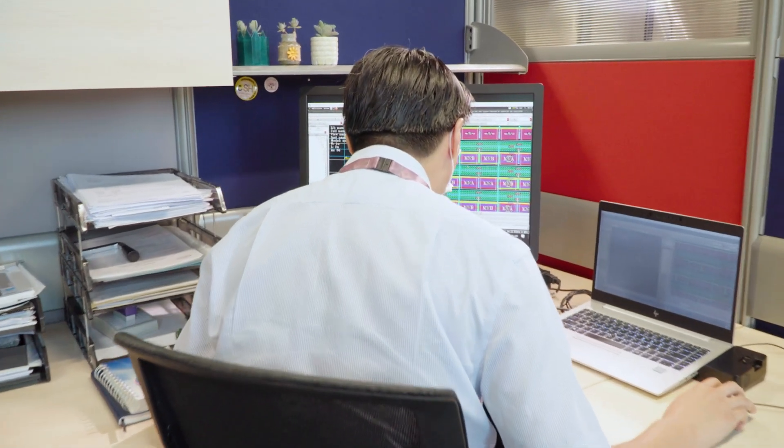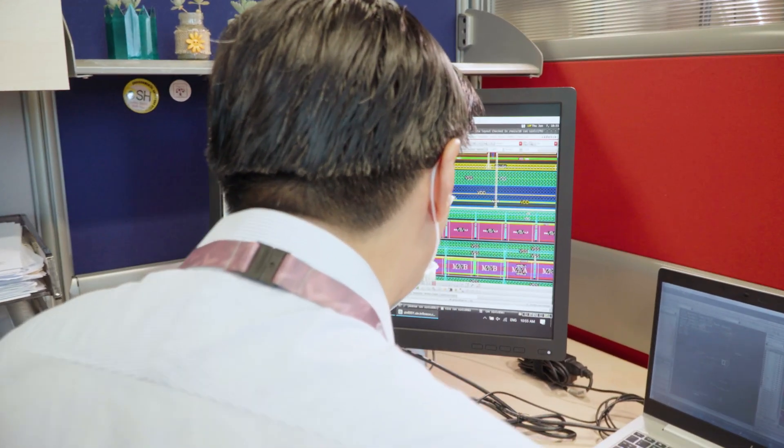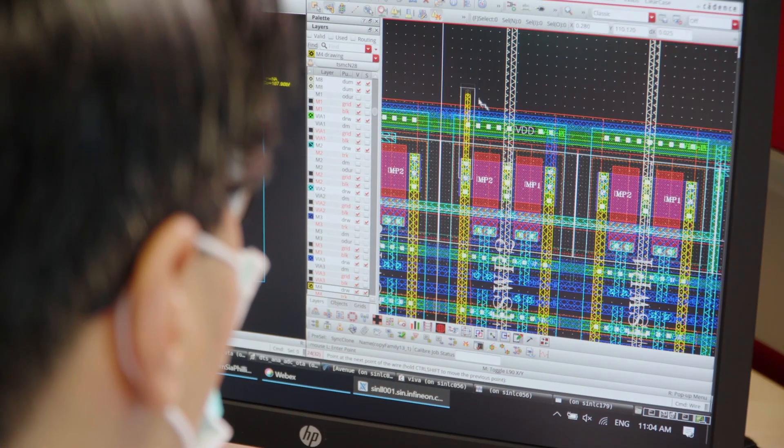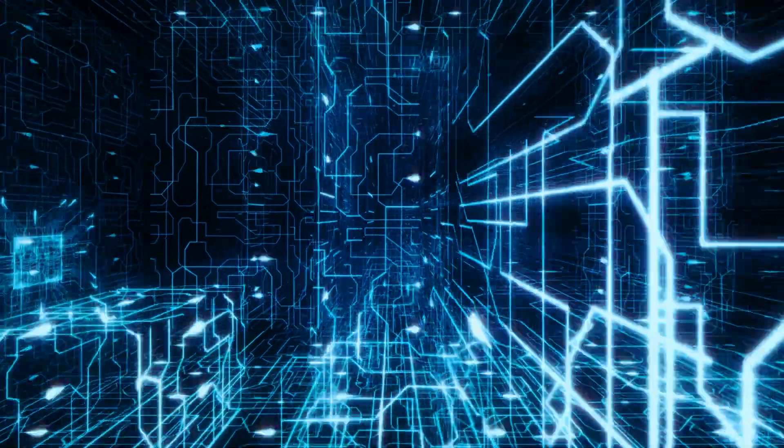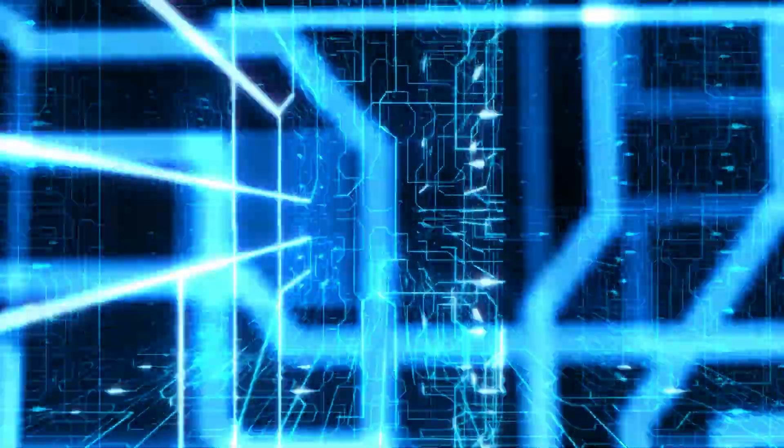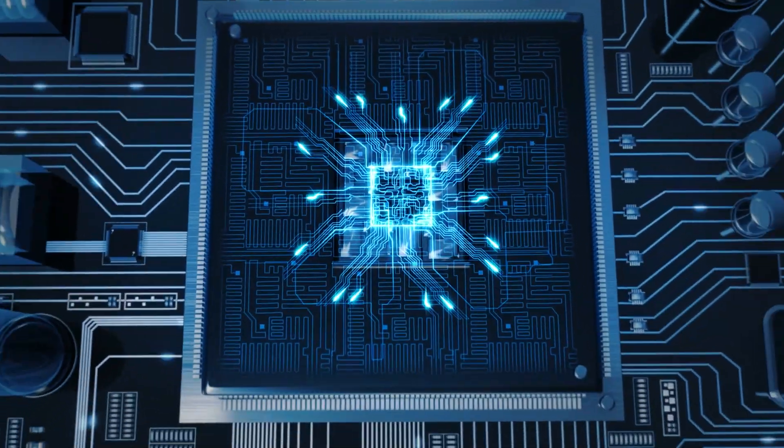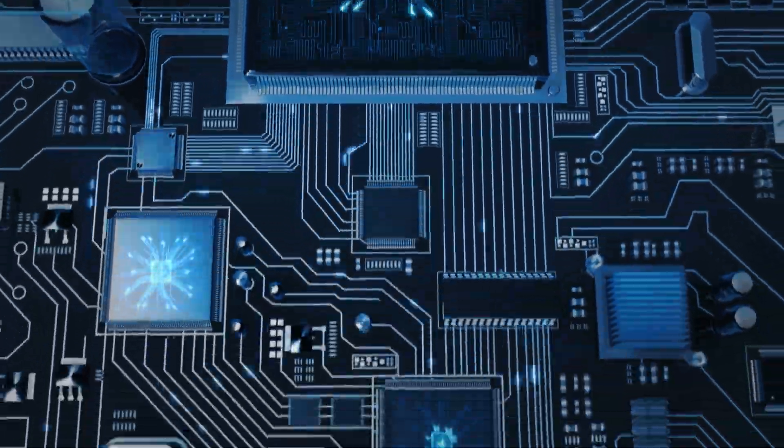A typical project in a development center begins after the business case and the system concept have been decided. The project kicks off with design and layout. This stage covers design entry, functional simulation, design optimization to physical implementation.